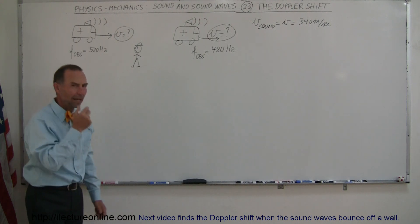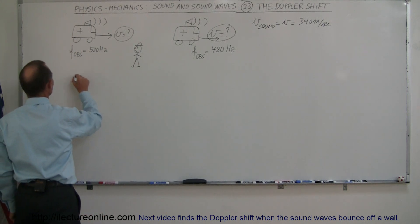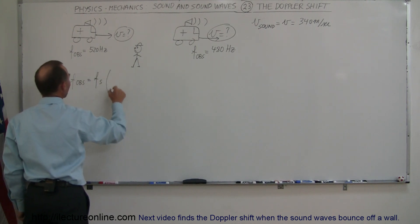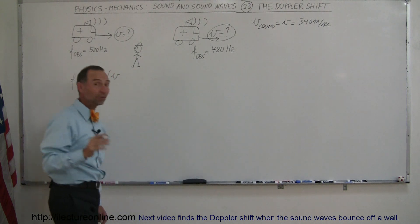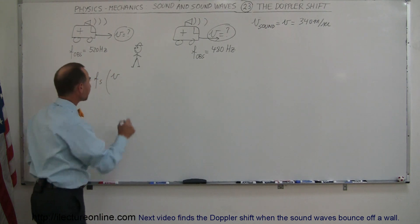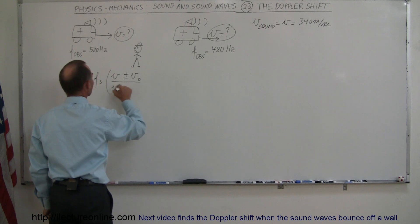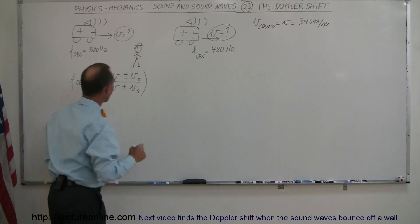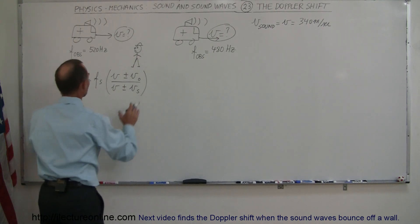Think about it this way: we use the equation where the frequency observed equals the frequency of the source times the velocity of sound in air — given as 340 meters per second — plus or minus the velocity of the observer, divided by the velocity of sound in air plus or minus the velocity of the source. We're going to apply that equation twice.